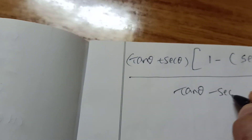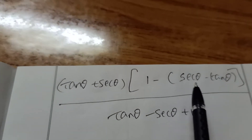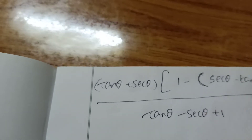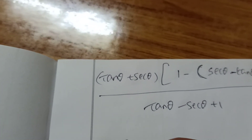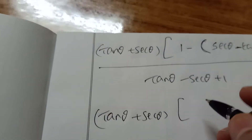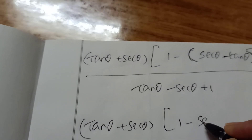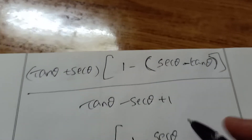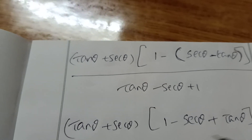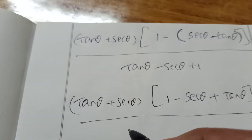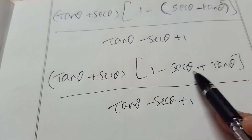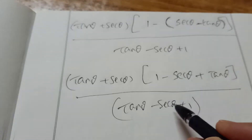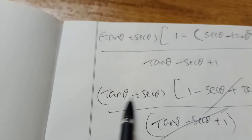The denominator is tan θ minus sec θ plus 1. Expanding the minus bracket: 1 minus sec θ plus tan θ, which equals tan θ minus sec θ plus 1. This matches the denominator exactly, so the (tan θ minus sec θ plus 1) terms cancel — the whole denominator cancels with the factored bracket. Remaining is tan θ plus sec θ.